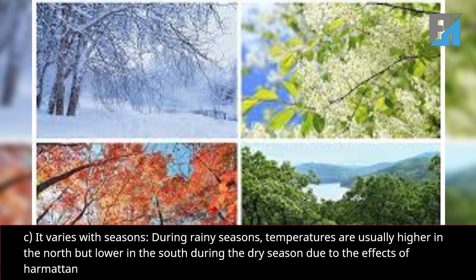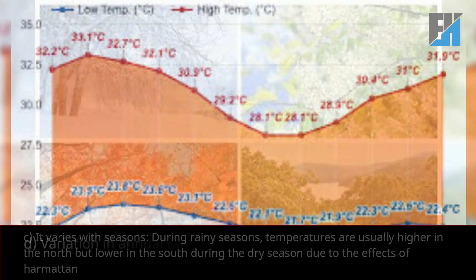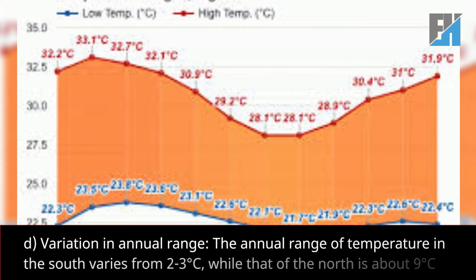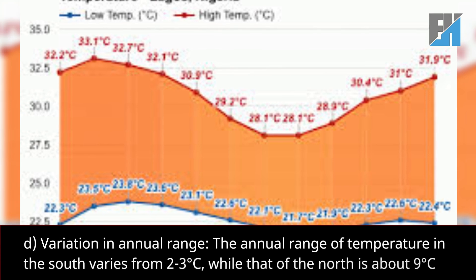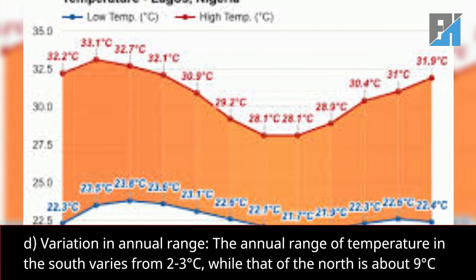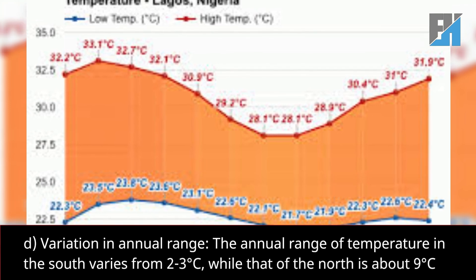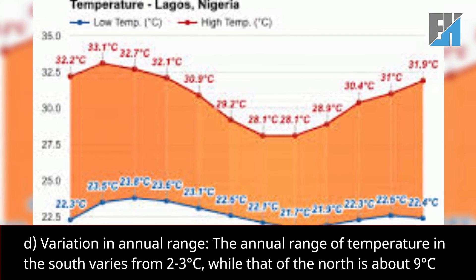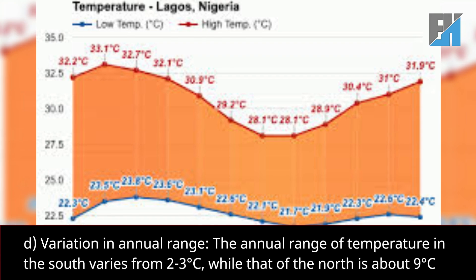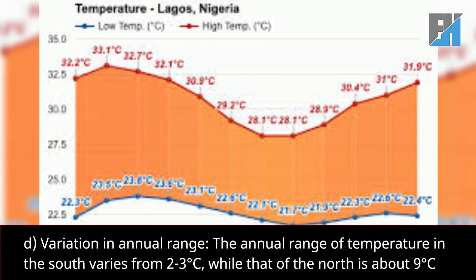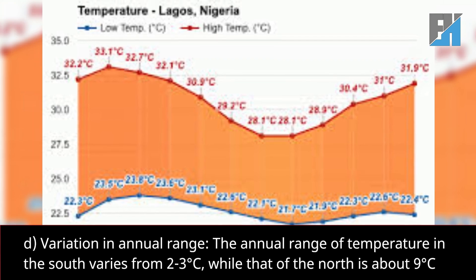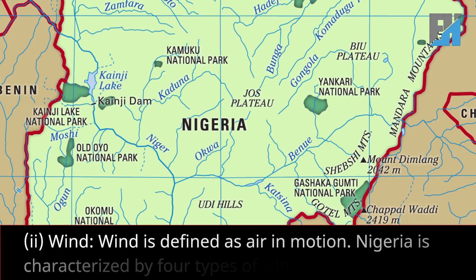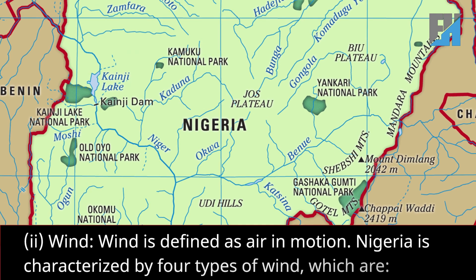During the dry season, this is due to the effects of the Harmattan. Fourth, variation in annual range: the annual range of temperature in the south varies from two to three degrees Celsius, while that of the north is about nine degrees Celsius.